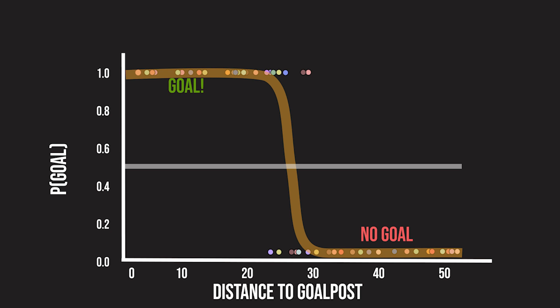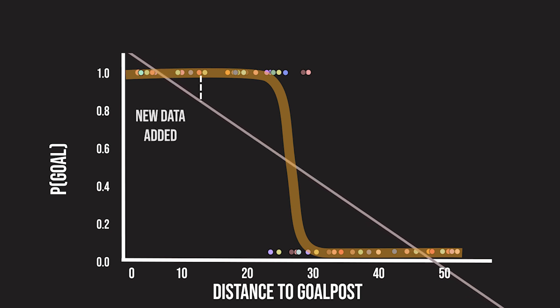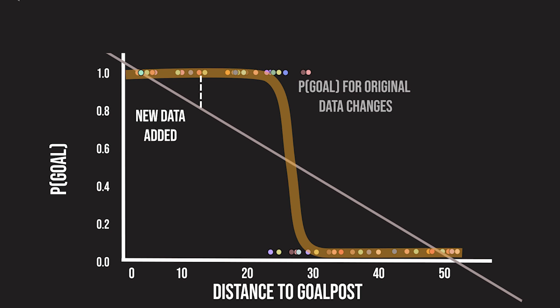Logistic regression is slightly more robust to outliers or new additions in the data. For example, if we added a few more positive data points, the linear model would change a lot while the logistic model would not change at all.